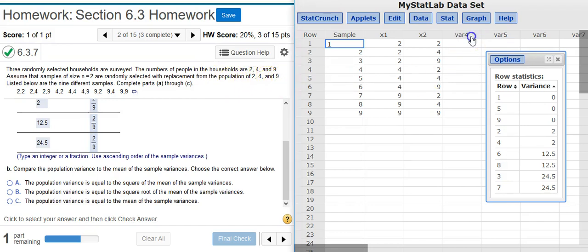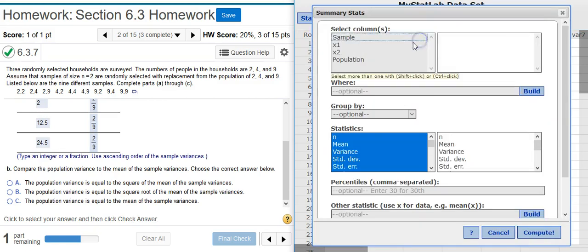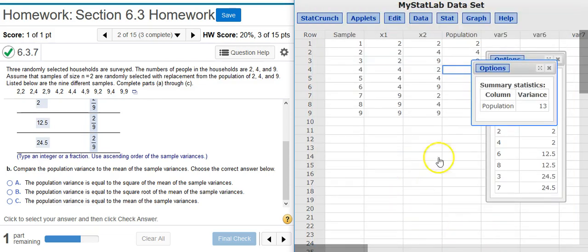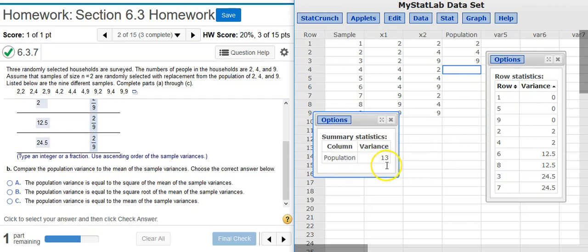So I'm going to come back here in StatCrunch and I'm going to label this population so I know what I'm looking at. 2, 4, and 9. And now I can come up here to Stat, Summary Stats, Columns, select that Population column, get the variance for that value, hit Compute, and here's my population variance which in this case is 13.